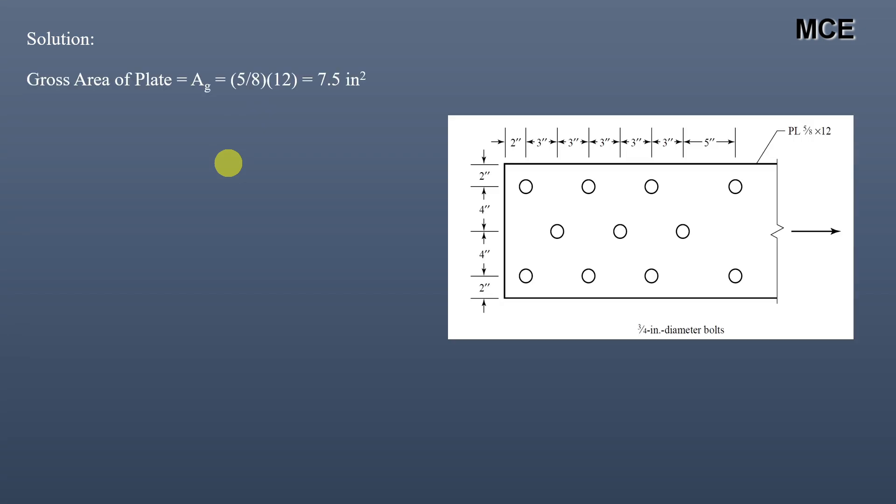First, the gross area of the plate is given as thickness times the gross width: (5/8) × 12 = 7.5 in². The hole diameter equals the bolt diameter plus 1/8 inch, so it will be 3/4 + 1/8 = 7/8 inch.